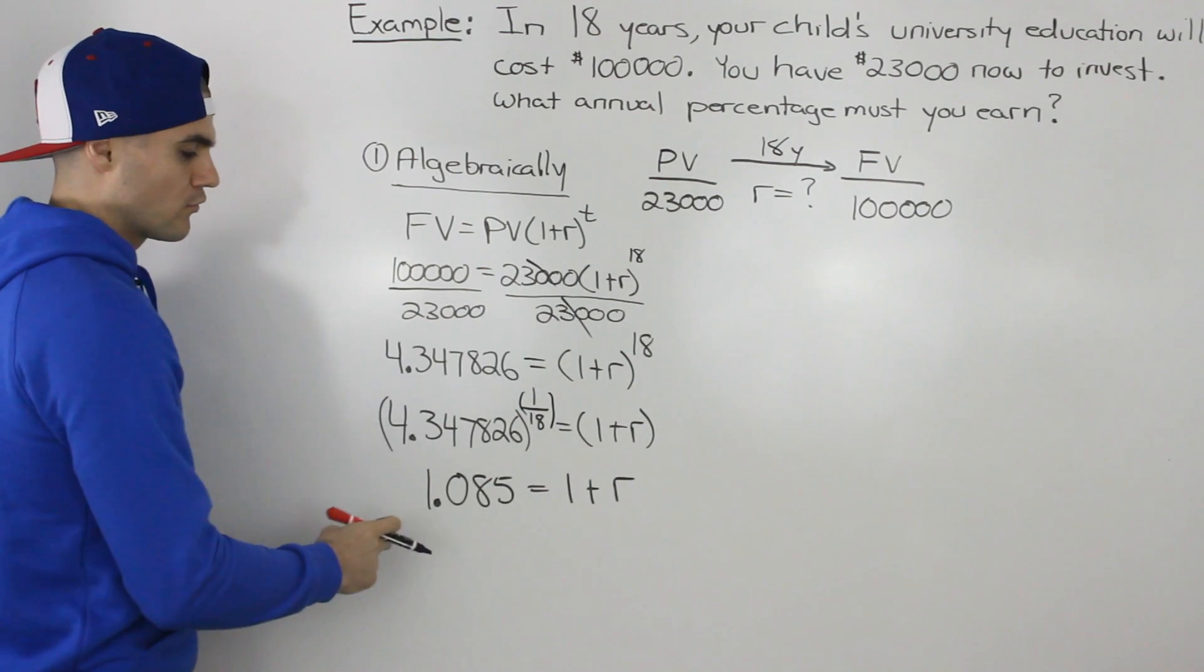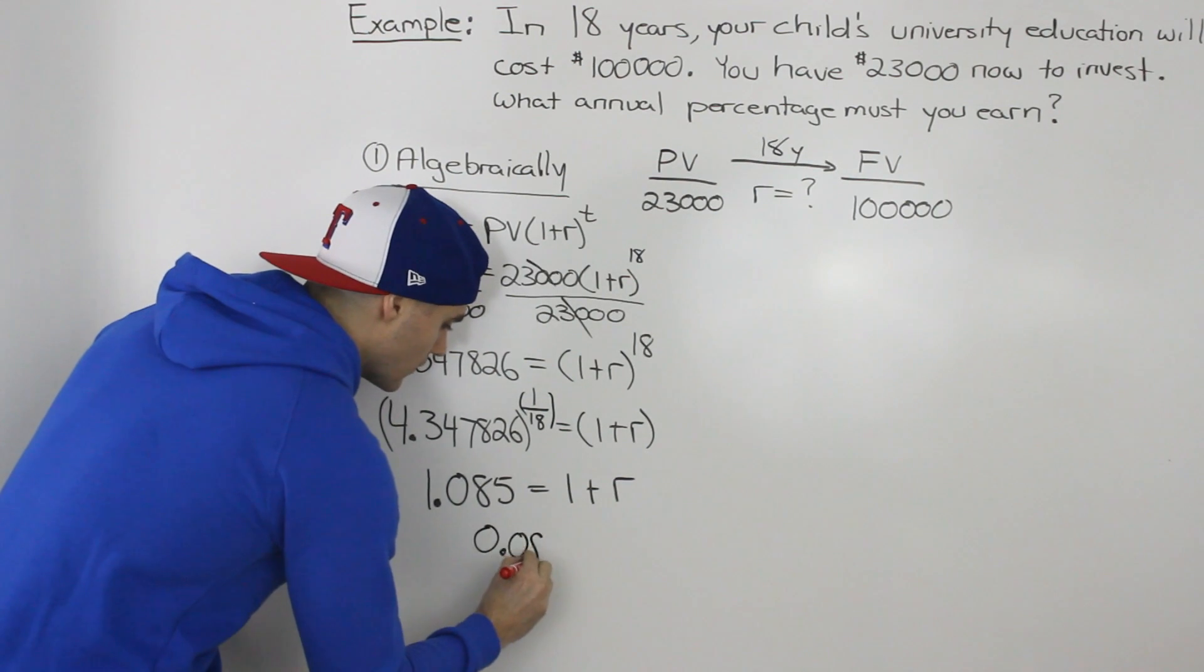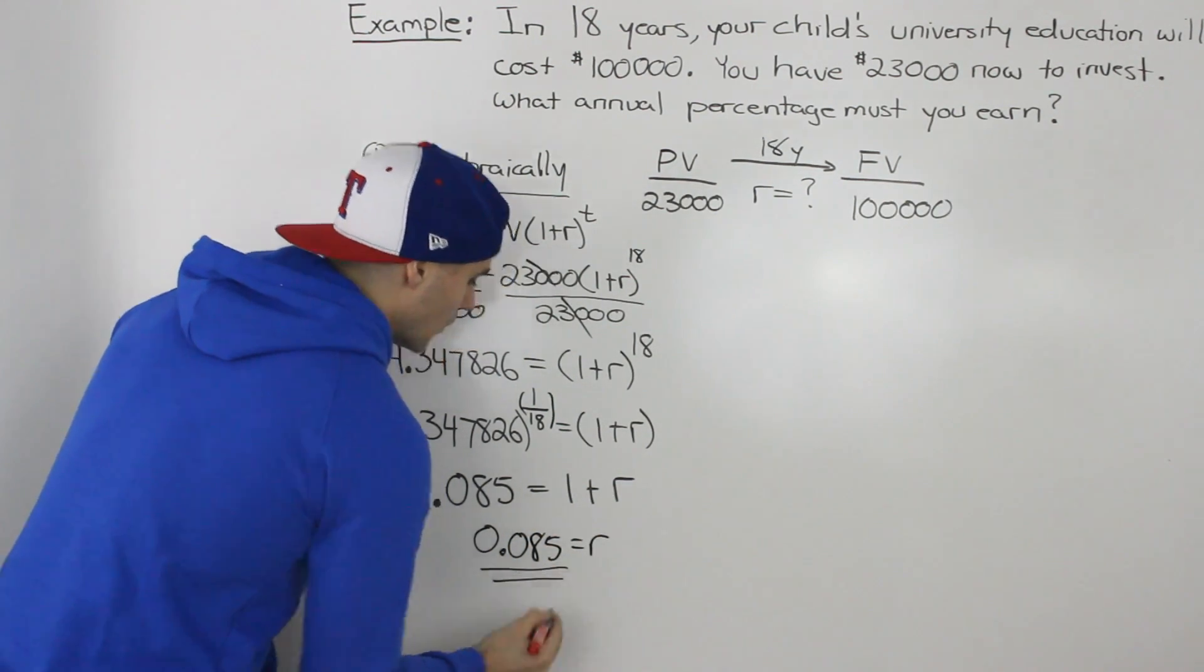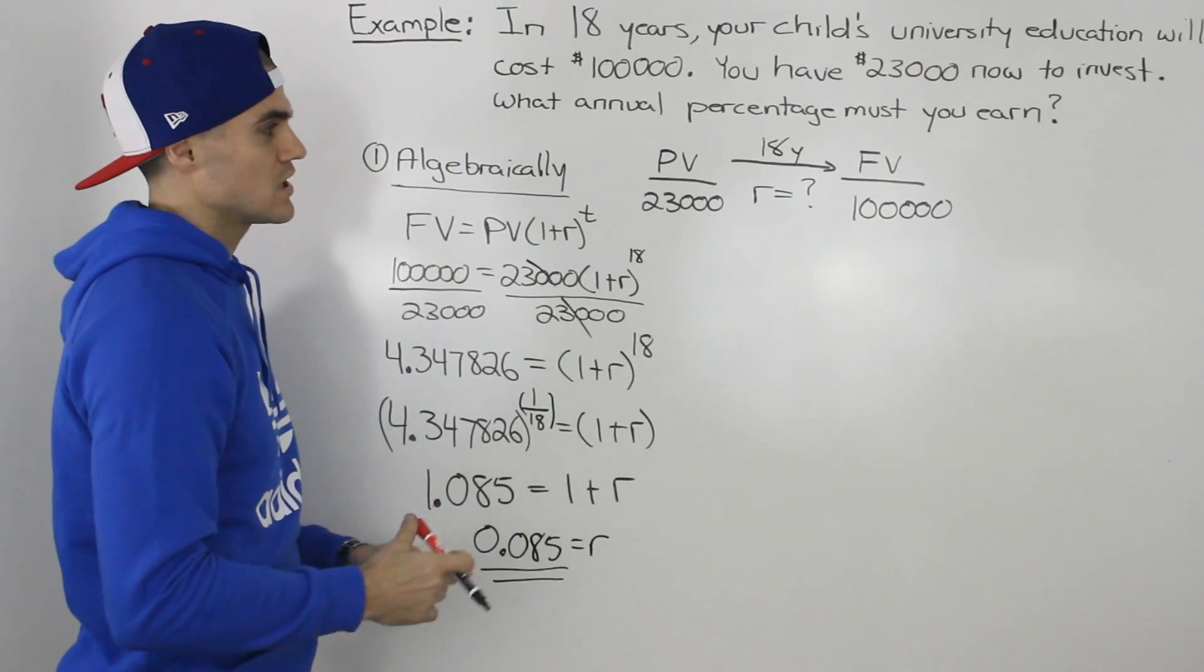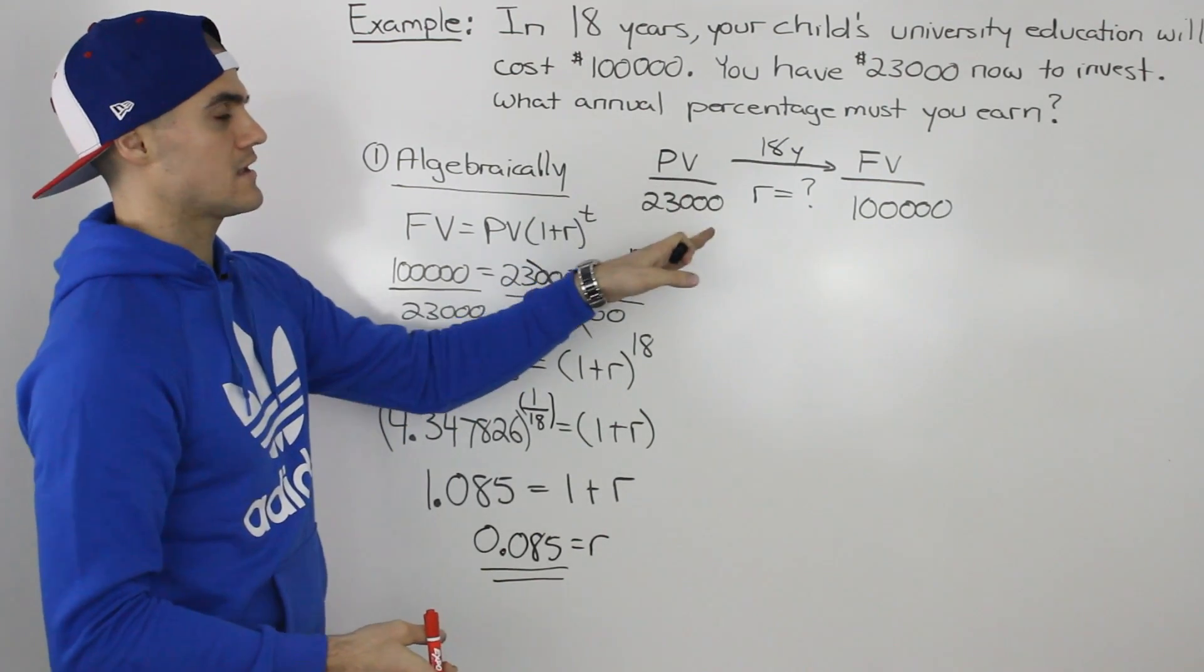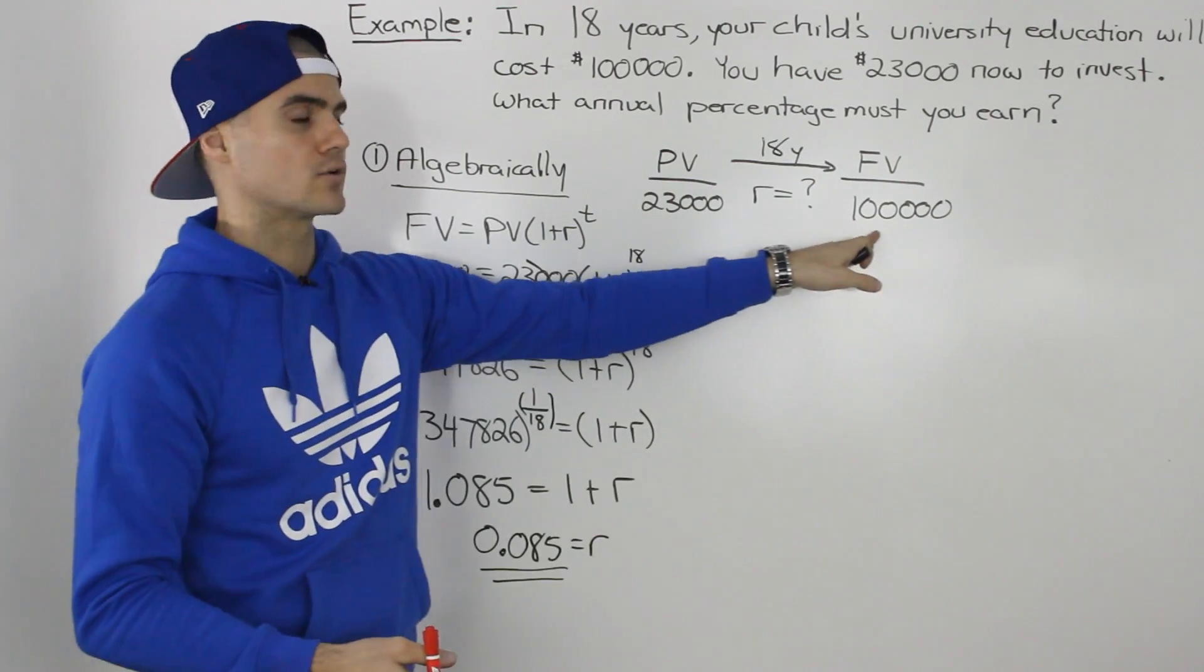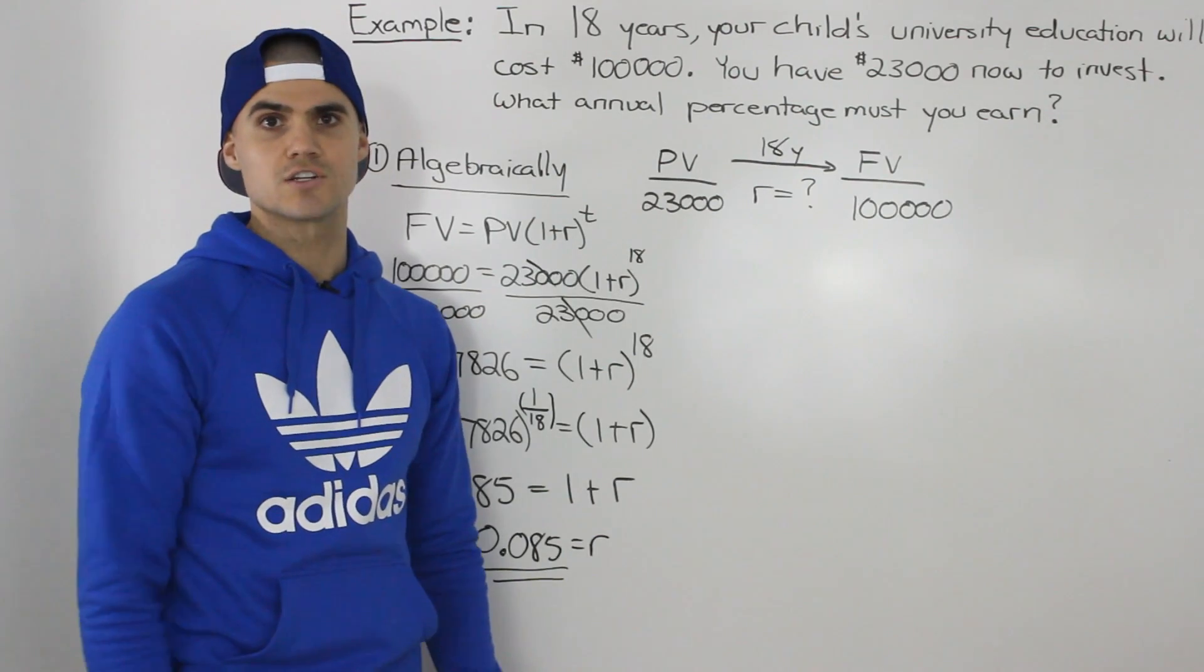When you bring the 1 over, 1.085 minus 1 gives us R approximately 0.0854 or 8.5%. That's the annual percentage you must earn. If you invest $23,000 for 18 years, compounded annually, you would get $100,000 to cover the cost for your child's university education.